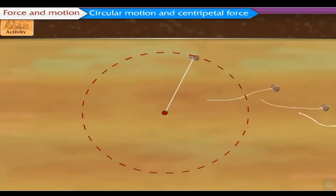If we release the string, the force applied by us on the stone stops acting and at that instant, the stone flies off along a straight line which is the tangent to the circle at the position of the stone. The stone goes along the tangent because that is the direction of the velocity of stone at that instant of time.